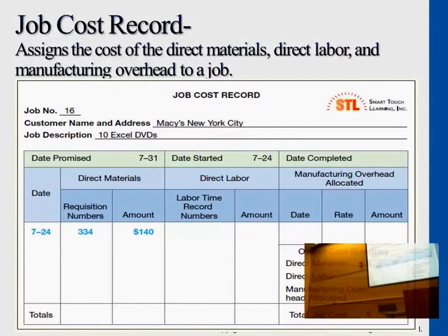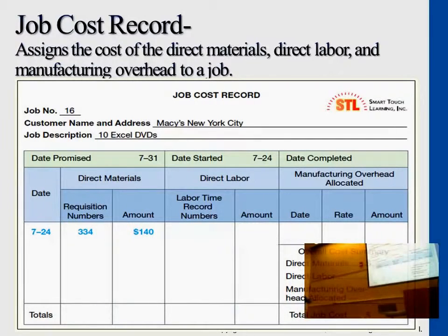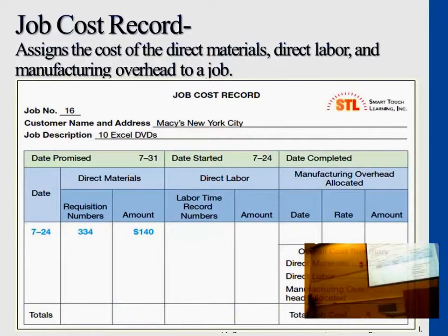Now we're just talking about direct materials. When you purchase the materials, you would debit materials inventory and credit accounts payable. When starting the production line, you transfer direct materials into work in process, and indirect ones into manufacturing overhead — that is the indirect category.